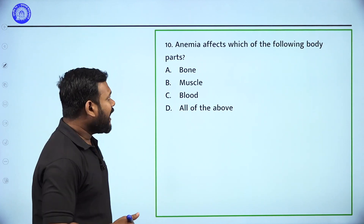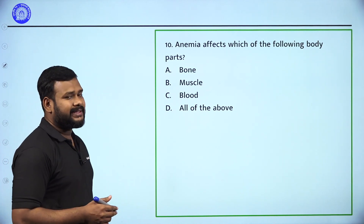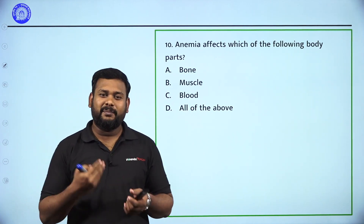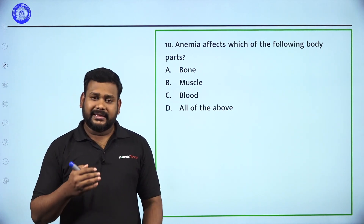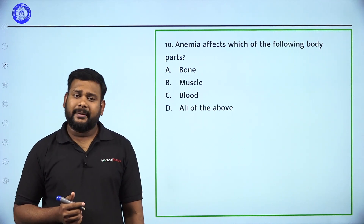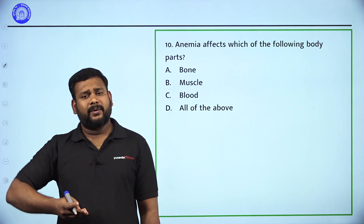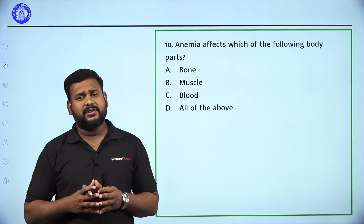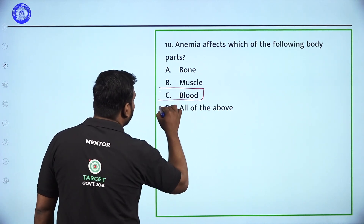Next question: Anemia affects which of the following body parts? Options: bone, muscle, blood, all of the above. Anemia is a blood-related condition. It especially affects RBCs — red blood cells. Anemia purely depends on blood. So Option C, Blood, is the correct answer.